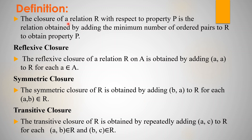This is the characteristic of closure of relation. It is a general definition involving reflexive, symmetric, and transitive properties. The closure of a relation R with respect to property P is the relation obtained by adding the minimum number of ordered pairs to R to obtain property P. For example, if property P is symmetric, we find the relation obtained by adding the minimum number of ordered pairs to R to obtain the symmetric property P.